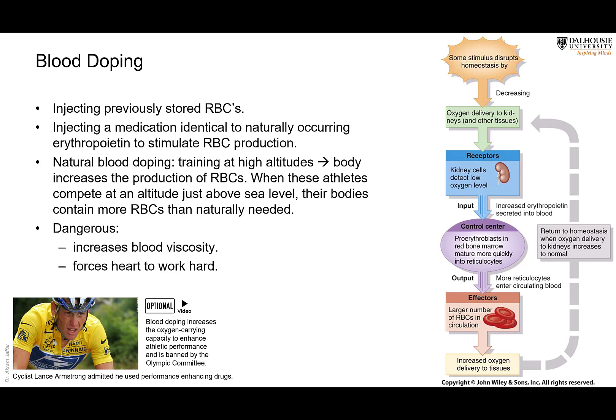Blood doping can occur in different ways. One method involves repeated blood transfusions, which increases the number of RBCs in circulation since the excess fluid is lost but the RBCs remain. Another method is injecting a synthetic product that mimics erythropoietin, stimulating the body to produce more and more RBCs to increase oxygen-carrying capacity — both methods are now banned and illegal.